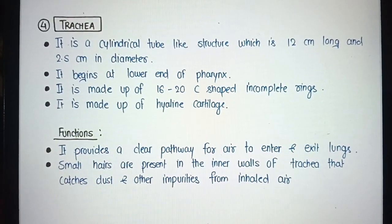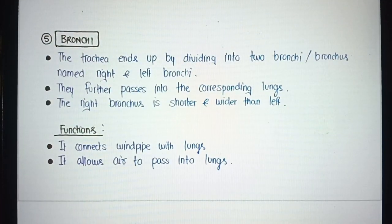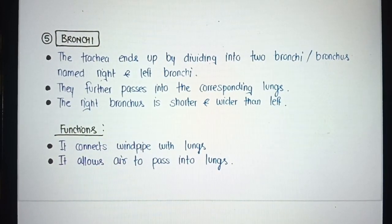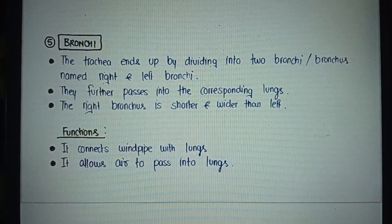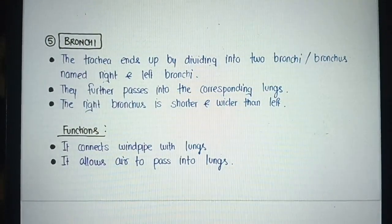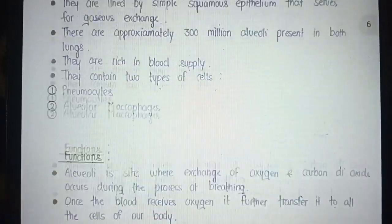Bronchi. The trachea ends by dividing into two bronchi named right and left bronchi. They further pass into the corresponding lungs. The right bronchus is shorter and wider than the left. Functions: It connects the windpipe with the lungs and allows air to pass into the lungs.